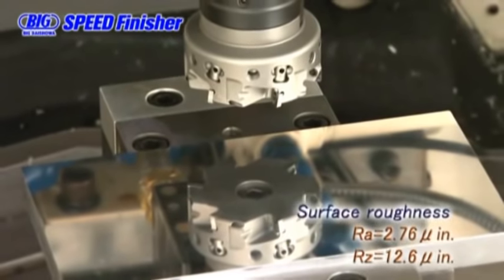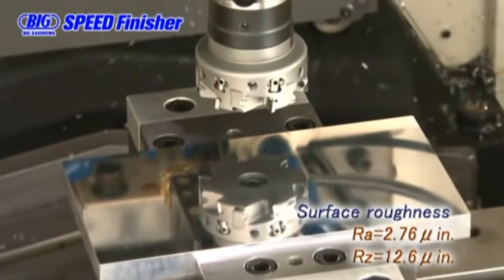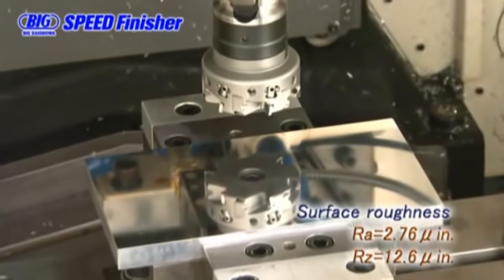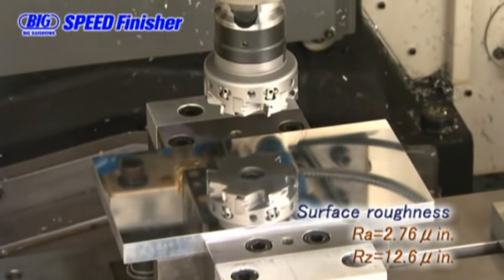Surface roughness is 2.76 micro inches Ra and Rz is 12.6 micro inches. The height difference of the machined surface is less than 40 millionths of an inch, almost nothing.